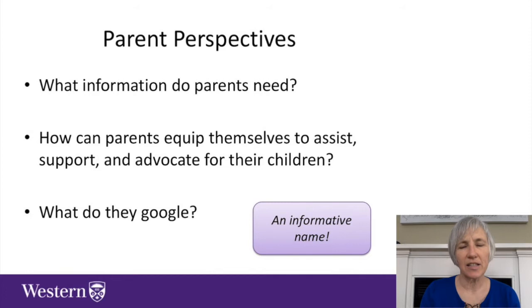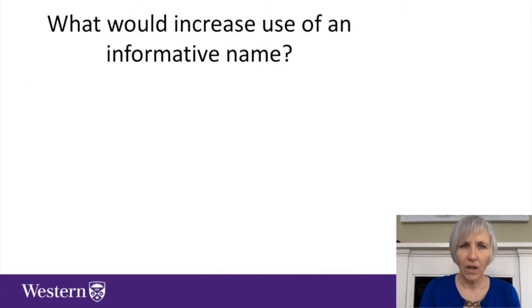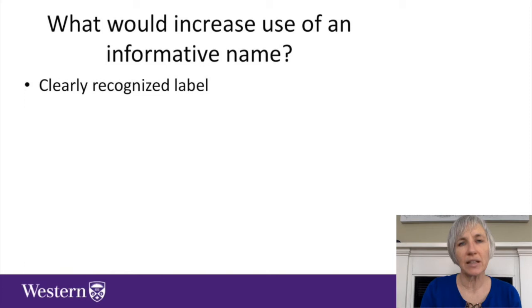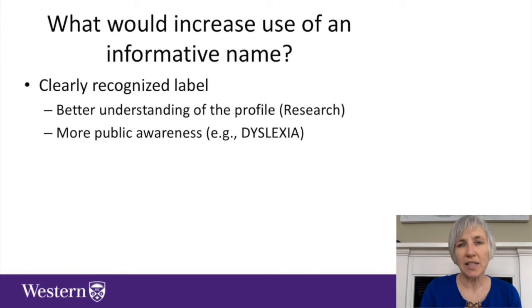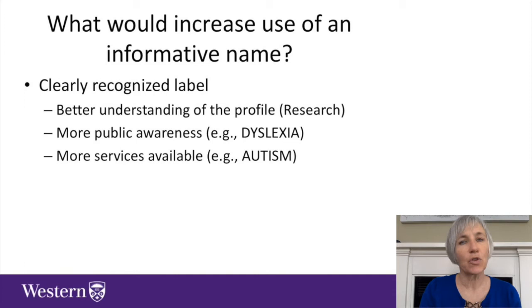Imagine if we don't provide a consistent label — then these parents are out there alone, knowing no one else who has a child with the same kind of problem that their child has. So what would increase the use of an informative name or label in child language disorders? Well, if we had a clearly recognized label that we were all using consistently, that would have an impact on our practice. It would also lead to a better understanding of the profile, because it would allow us to focus research on that particular area.